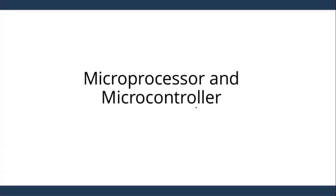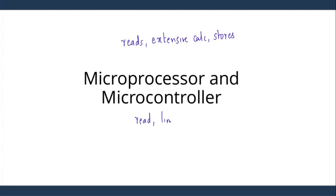Hi everyone. In this lecture we will look at the difference between a microprocessor and a microcontroller. A microprocessor basically reads the data, does extensive calculation, and then stores back this data, while a microcontroller will read, does limited calculation, and finally control using the limited calculation it has done, or maybe it will store back the data. That is the basic difference between a microprocessor and a microcontroller.